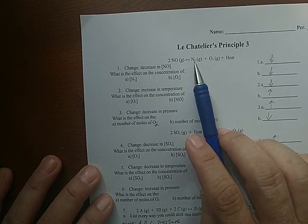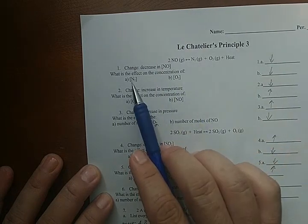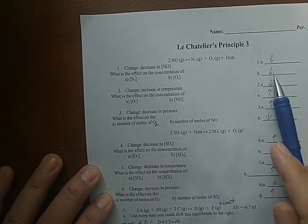So if we're going to the left, the N2 goes down, the O2 goes down, and the heat goes down. So the N2 and the O2 go down.